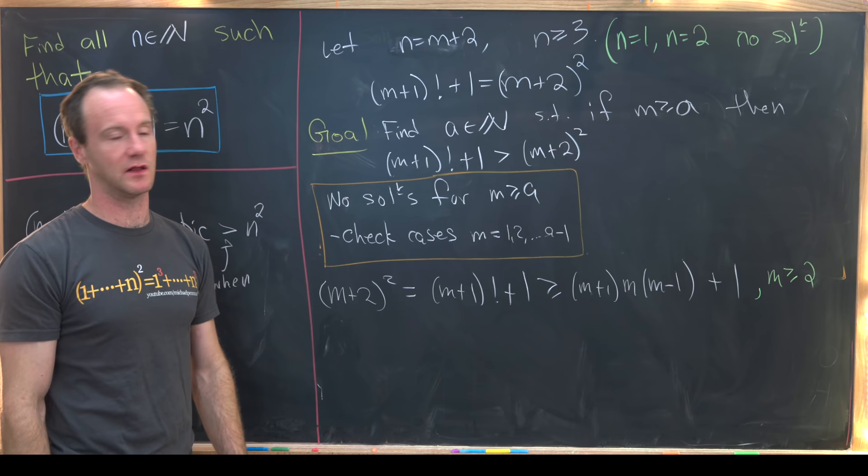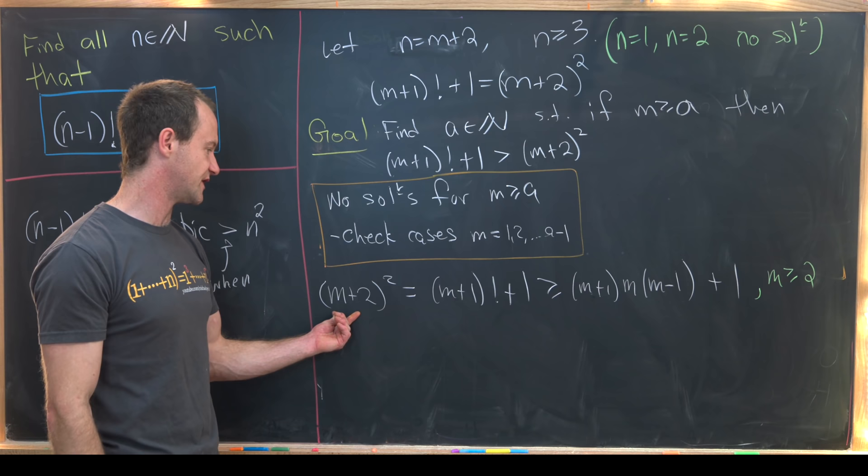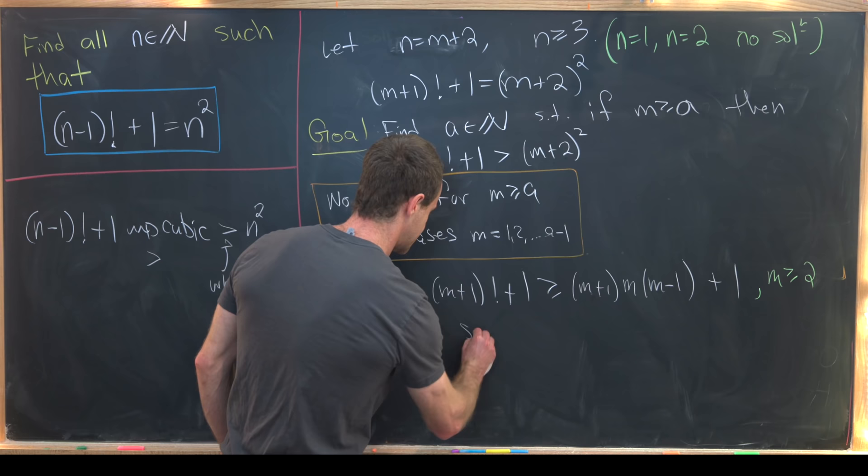But now notice that this right hand side is a cubic polynomial and cubic polynomials want to be larger than square polynomials. So if we can find all of the places where this cubic is larger than this square well then our equality can never be satisfied. So let's write that down.